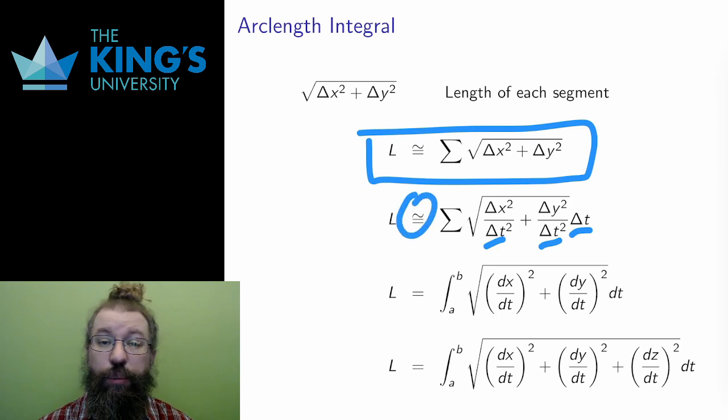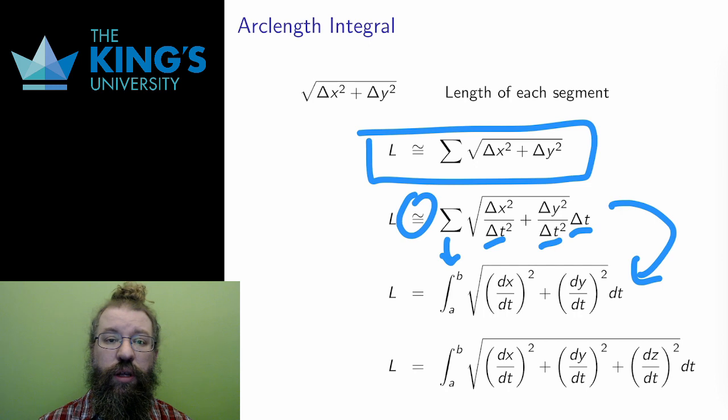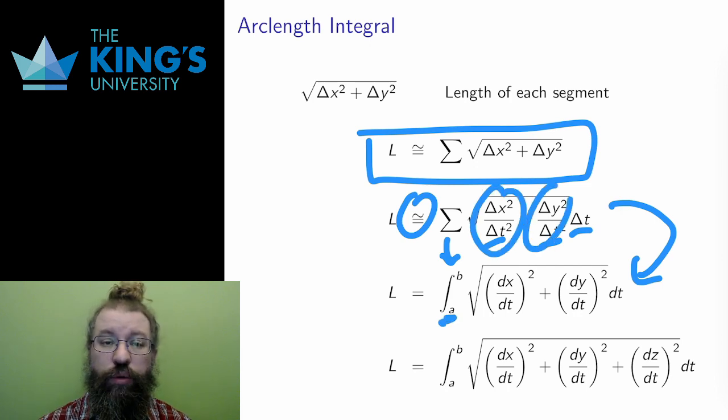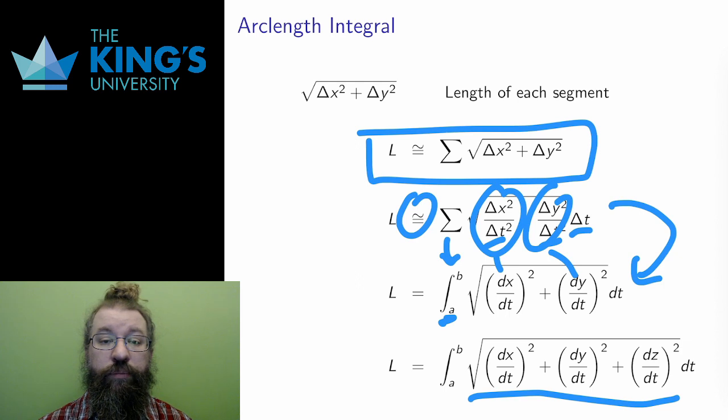Then I let the number of segments grow to infinity, producing a finer and finer approximation as I go along. In the limit, this becomes an integral. The ratios between the changes become derivatives inside the square root. And finally, this is true as well in R3 with three components, or in any Rn, and the general form is now shown here.